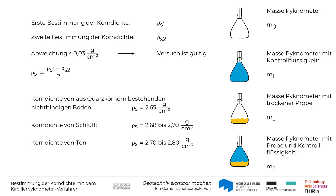Abschließend sei erwähnt, dass die aus Quarzkörnern bestehenden nichtbindigen Böden üblicherweise eine Korndichte von 2,65 g pro Kubikzentimeter aufweisen, während die Korndichten von Schluff mit 2,68 bis 2,70 g pro Kubikzentimeter und Ton mit 2,70 bis 2,80 g pro Kubikzentimeter aufgrund unterschiedlicher Mineralogie etwas darüber liegen.